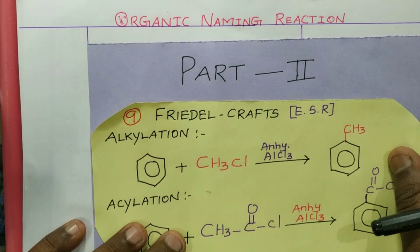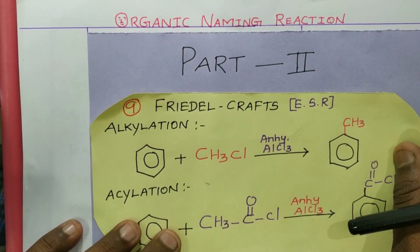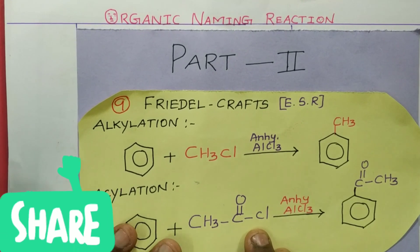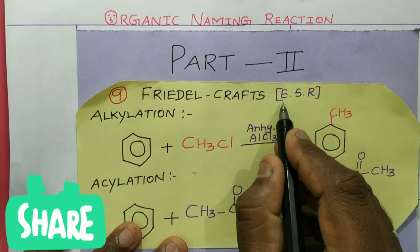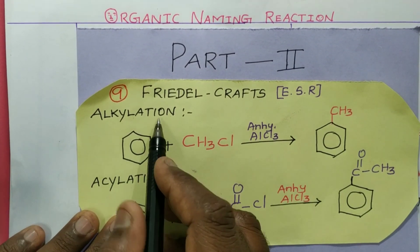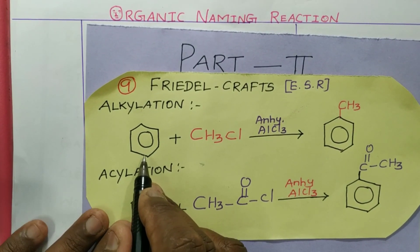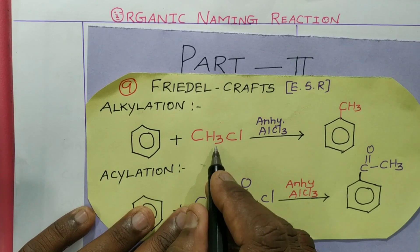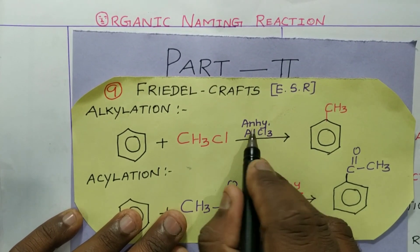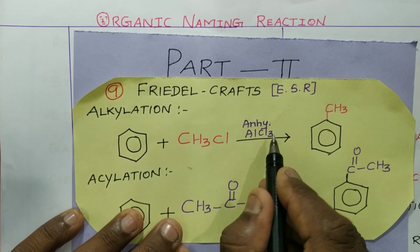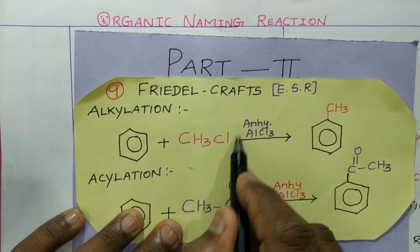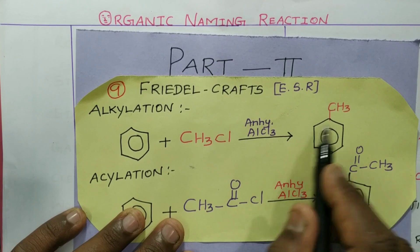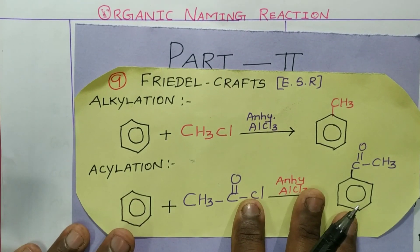Next is the Friedel-Crafts alkylation reaction, which appears in almost all units. It is a type of electrophilic substitution reaction. When benzene reacts with an alkyl halide such as methyl chloride in the presence of anhydrous aluminium chloride, the AlCl₃ reacts to form an electrophile. That electrophile attaches to the benzene ring, giving toluene as the product.